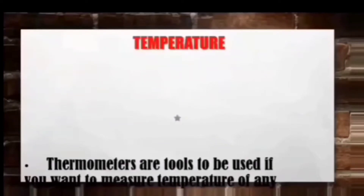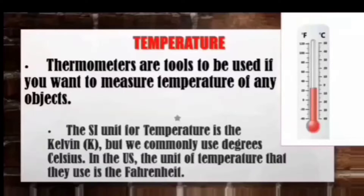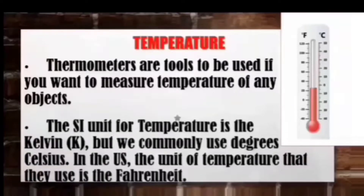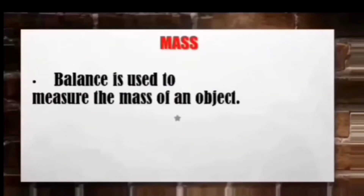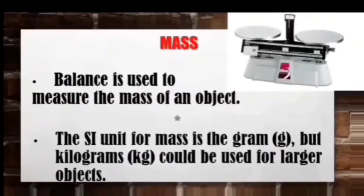Number four: temperature. Thermometers are tools used to measure an object's temperature. The standard unit is Kelvin, but we commonly use degrees Celsius. However, in the US, the unit of temperature used is Fahrenheit. Number five: mass. Balances such as platform balance and double or triple beam balance are used to measure the mass of an object. We use grams as the standard unit, but kilograms can be used for larger objects.